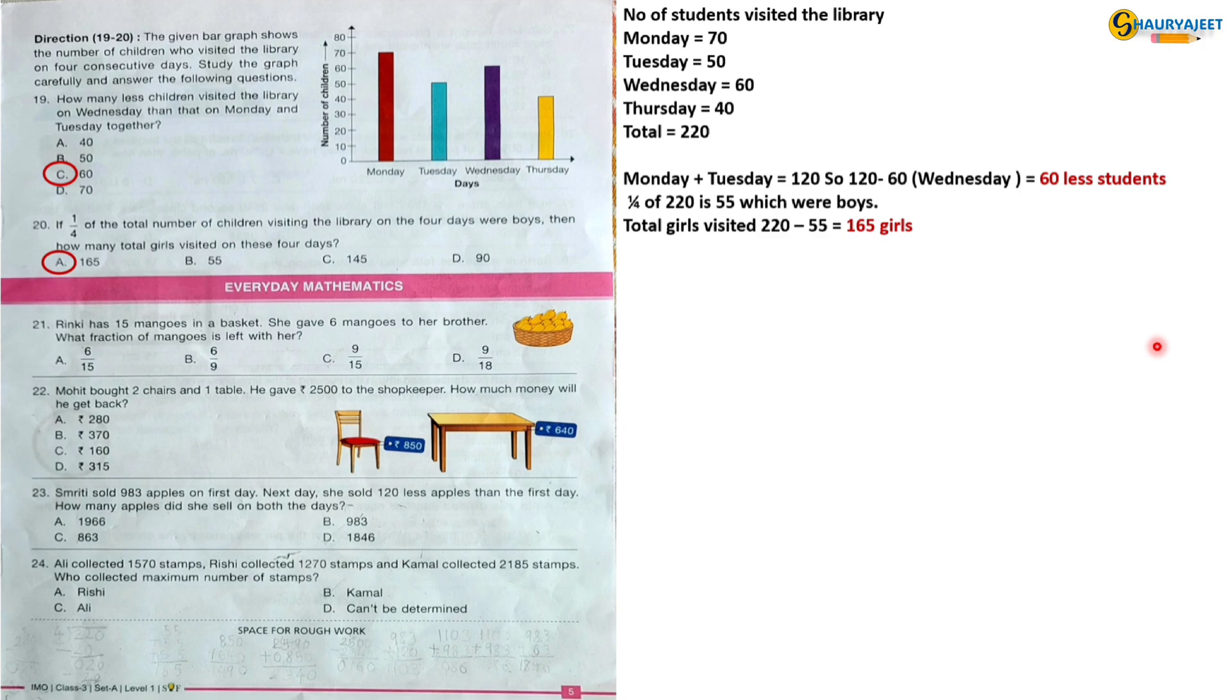Let's move to the next section, Everyday Mathematics. Question 21: Linky has 15 mangoes in a basket. She gave 6 mangoes to her brother. What fraction of mangoes is left with her? Leftover mangoes with Linky are 15 minus 6 equals 9, which in fraction is 9 by 15. So the correct option is option C, 9 by 15.